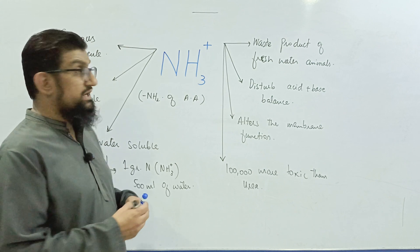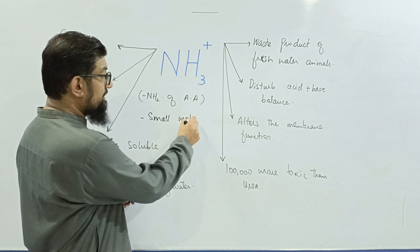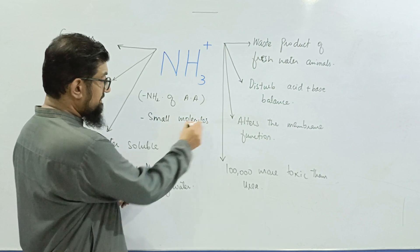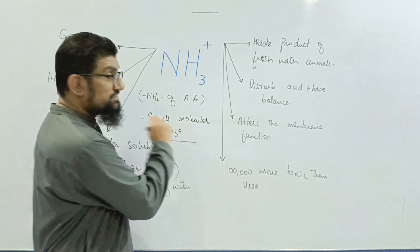Another factor which is contributing to the toxicity of ammonia is its small molecular size. As you know, small molecules have more rate of diffusion, so the diffusion rate of ammonia is very, very high.